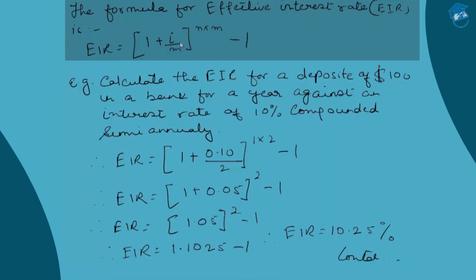Semi-annually means half of the nominal interest paid twice in a year. Quarterly means one-fourth of the nominal interest paid four times in a year. Never confuse this by assuming the full nominal interest of 10% is being paid twice — that would be 20%, which is incorrect. When we say the effective interest rate uses i/M, it means the nominal rate is fragmented into 1/M portions and each portion is compounded M times in a year.